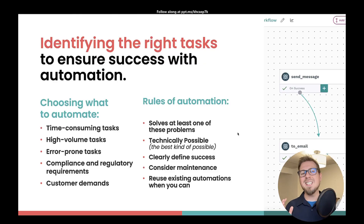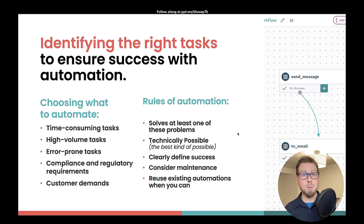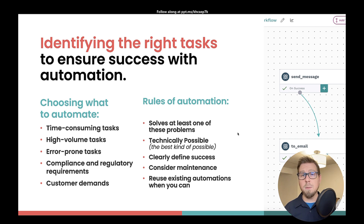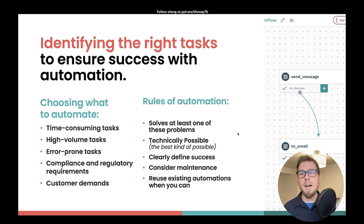First, we want to identify the right tasks to ensure success with automation. So we need to choose what to automate — anything that's a time-consuming task, high-volume tasks, or error-prone tasks. We also want to think about compliance or regulatory requirements, and of course customer demands. What do your customers need? How can you serve your customers better by having automated processes?